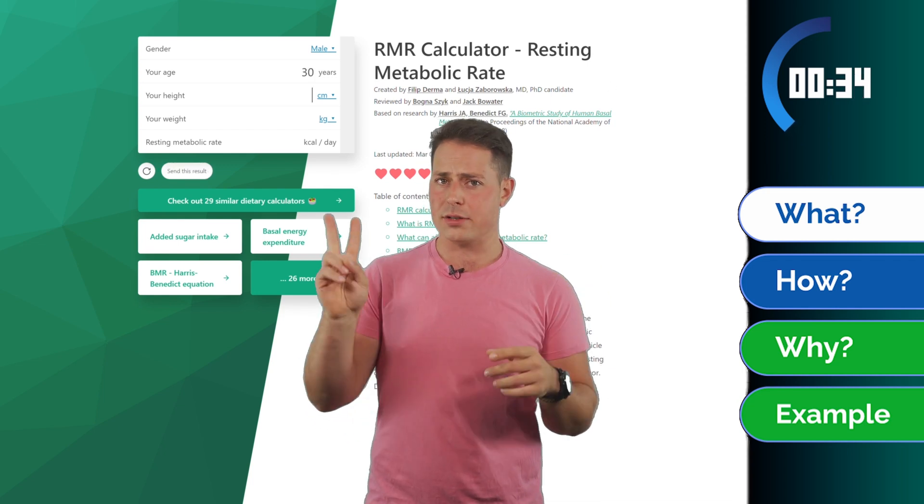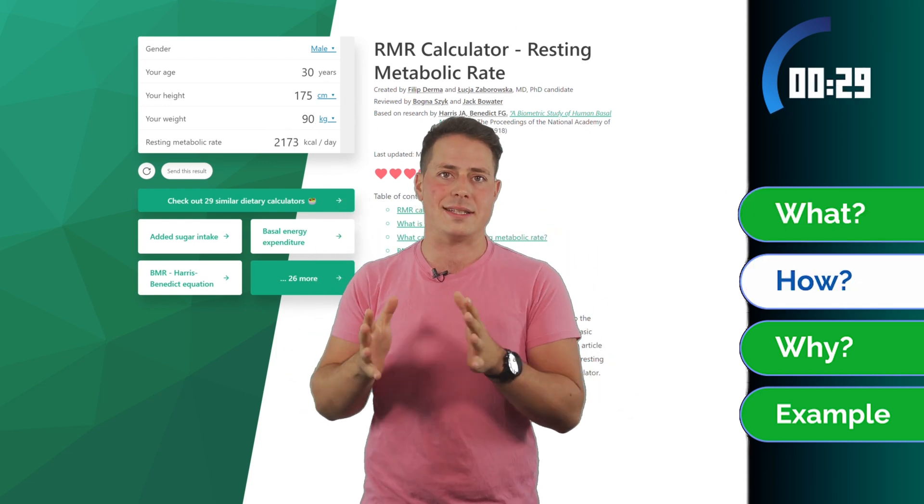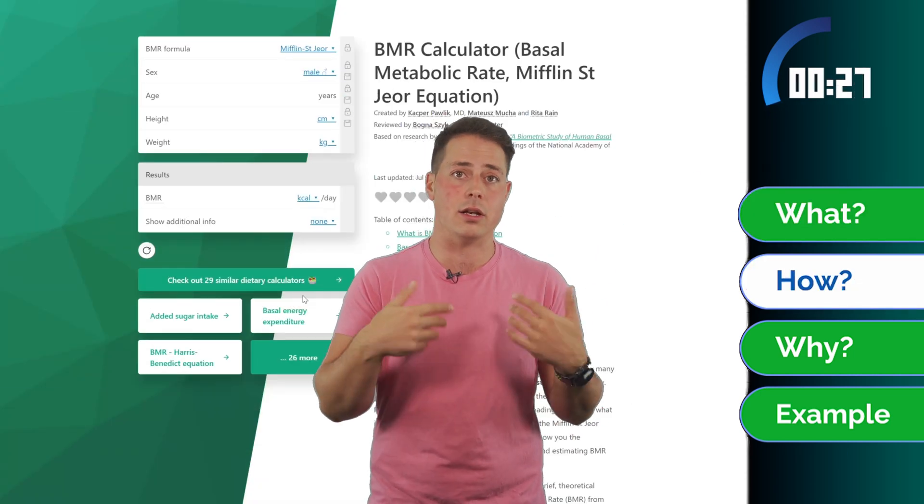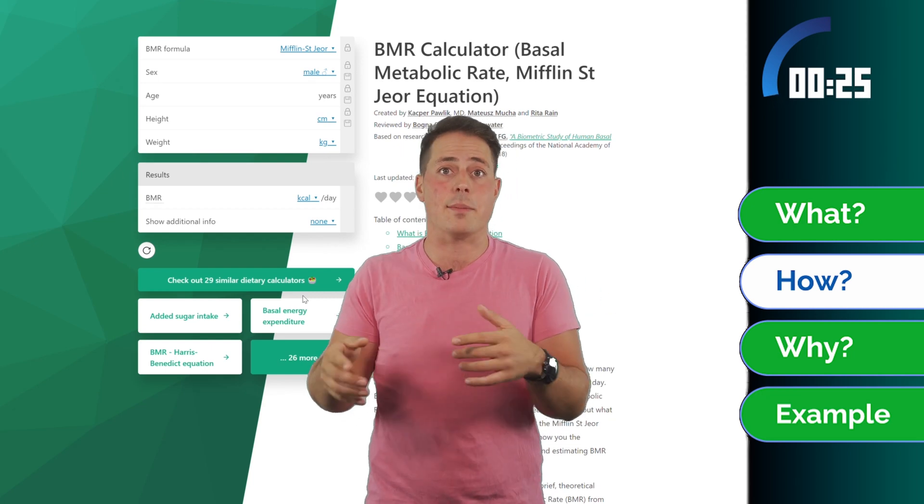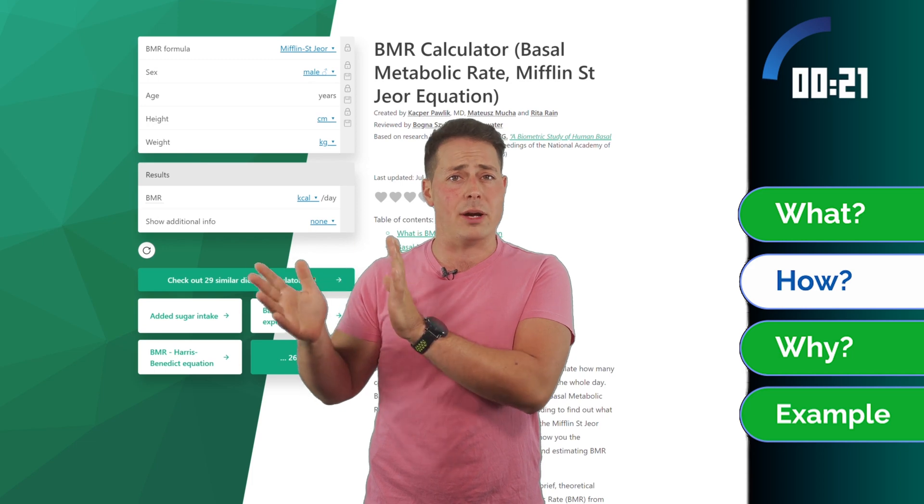The question of why two numbers? Well, there are technically 10. Because doing proper BMR or RMR studies requires very expensive equipment and lots of time. That's why scientists have come up with ways to approximate them without the hassle, and with a small margin of error of about 300 calories.